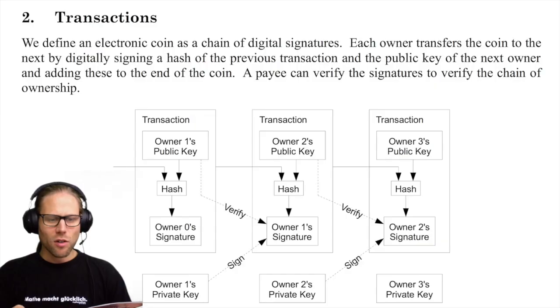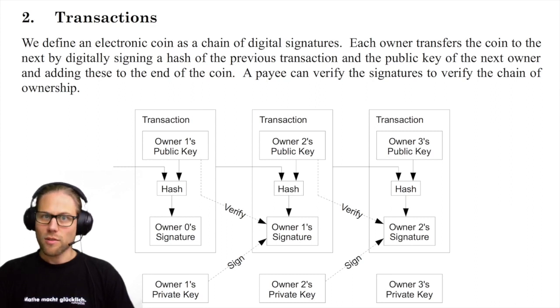Maybe in the past you had a chance to read chapter 2 of Satoshi Nakamoto's paper, where Satoshi Nakamoto defines what an electronic coin is. I will quote from the paper: "We define an electronic coin as a chain of digital signatures." So here you see that digital signatures are the core building block.